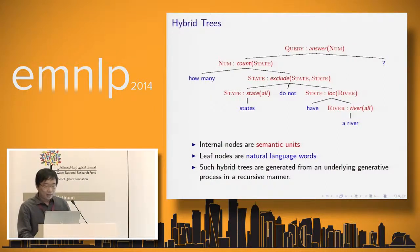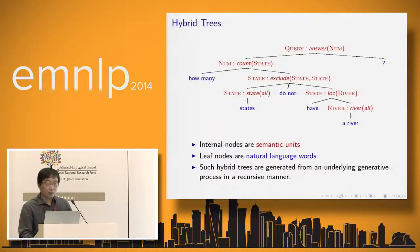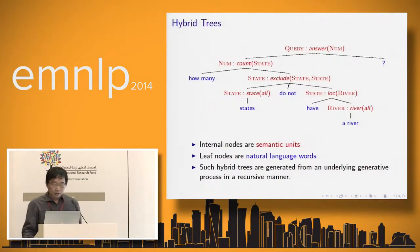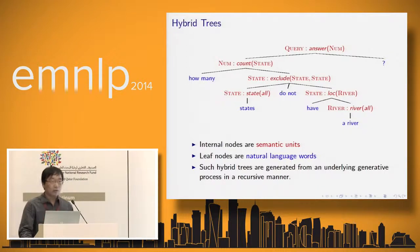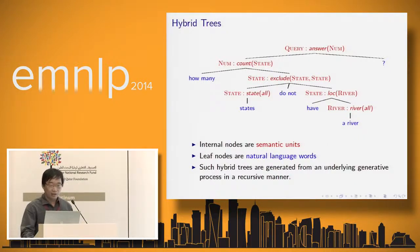This slide shows an example hybrid tree, which contains both the semantics and the corresponding natural language sentence shown in one of the previous slides. In this representation, the internal nodes are semantic units and the leaf nodes are natural language words. The assumption is that this kind of structure is generated from an underlying generative process.